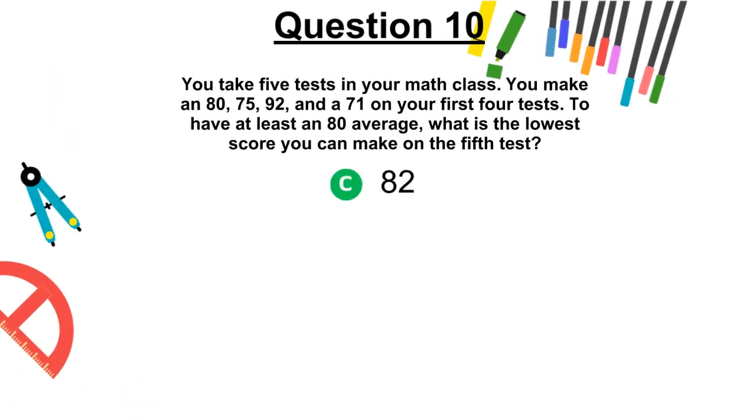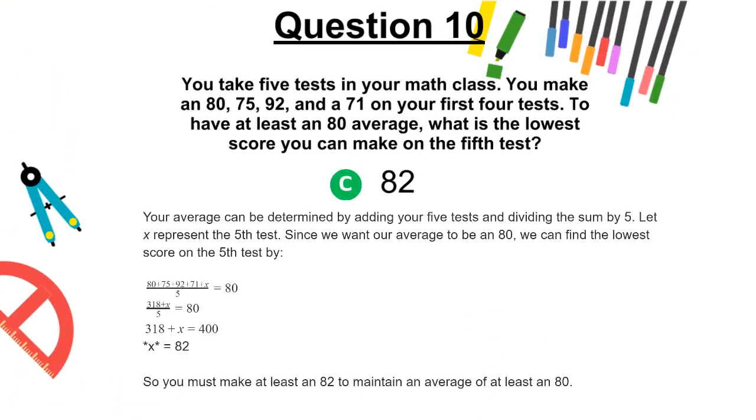The correct answer is C, 82. Your average can be determined by adding your 5 tests and dividing the sum by 5. Let x represent the 5th test. Since we want our average to be an 80, we can find the lowest score on the 5th test by doing the following. So as you can see, you must make at least an 82 to maintain an average of at least an 80.